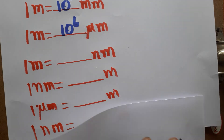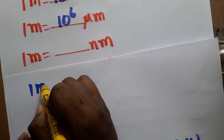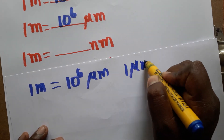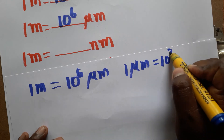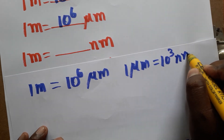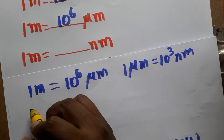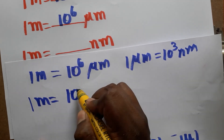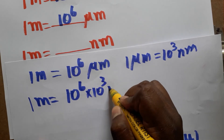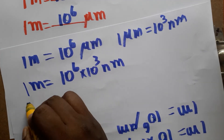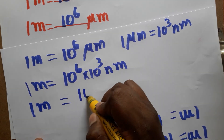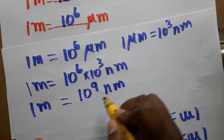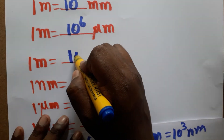Next: 1 meter is equal to how many nanometers? We know 1 meter is 10 power 6 micrometers, and 1 micrometer is 10 power 3 nanometers. So writing 1 meter equals 10 power 6 into 10 power 3 nanometers, we get 1 meter is equal to 10 power 9 nanometers.